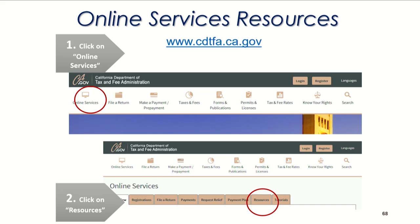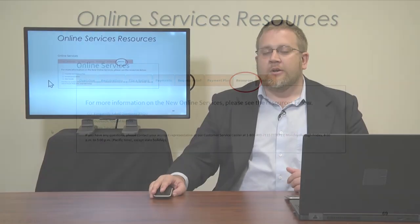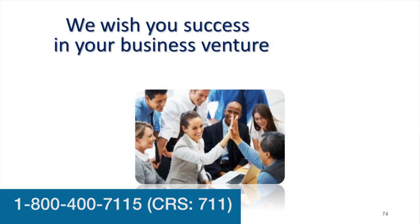If you need more resources on how to file or you need more help with your taxes, we have online resources. You can come to our website, cdtfa.ca.gov, hit online services, and then select the tab which says resources. You'll see frequently asked questions, special notices, and video tutorials. Also, I want to invite you again to call our customer service center — we have the ability to hop on the website with you and follow along and help you fill out your tax return. That number is 1-800-400-7115. Thank you for watching today. We wish you success in your business venture.